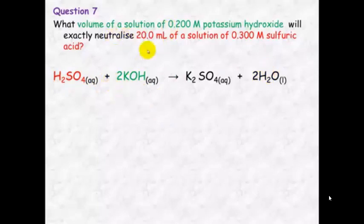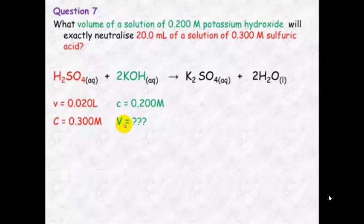Look at the information the question gives you, the known information. The volume equals 20 mL which you must change to liters, and the concentration is 0.300 molar. Your concentration of your unknown is 0.200 molar and we are trying to calculate the volume.